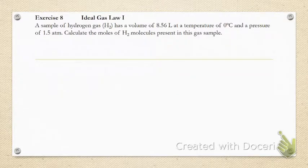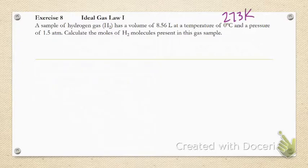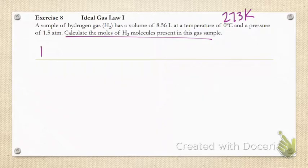Let's work some problems. Exercise 8: we have a sample of hydrogen gas, 8.56 liters. As soon as we see a temperature, we say that is 273K, and a pressure of 1.5 atmosphere. Very lovely, they left everything in the units that we need. We're solving for moles, so we take PV equals nRT and solve for moles: it's PV over RT.